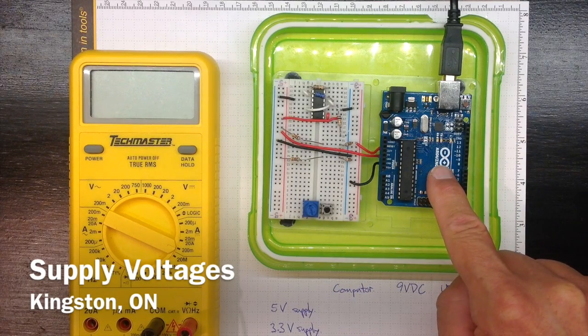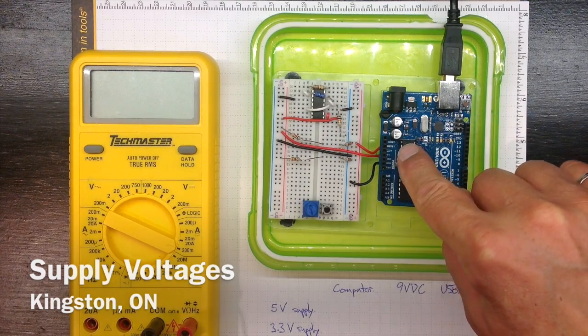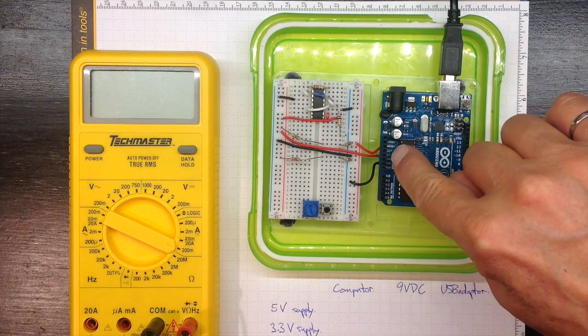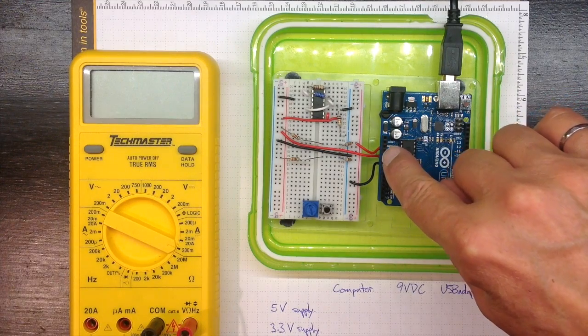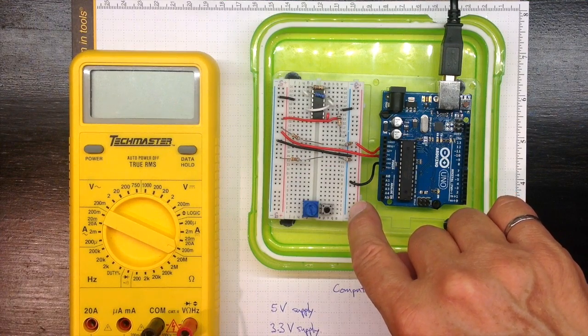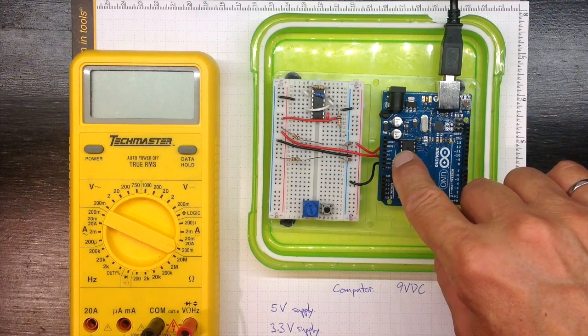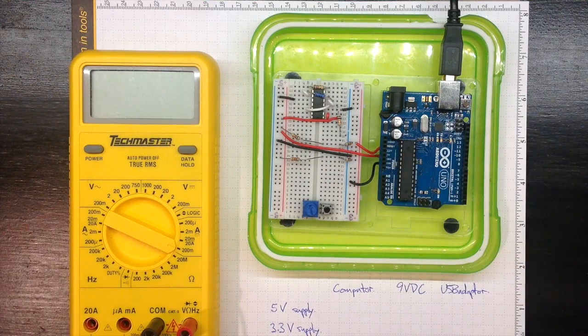The Arduino Uno provides two reference voltages as power supplies: a 3.3 volt pin and a 5 volt pin, which we've got connected to the rails on this breadboard. Now those are nominal voltages. It would be interesting to see how they change depending on how we supply power to the Arduino.